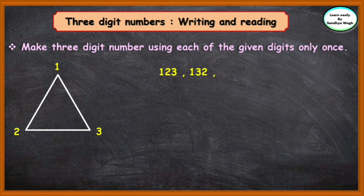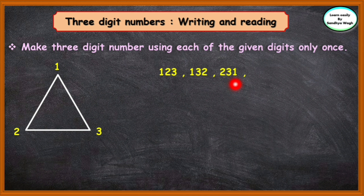Now, let us take 2 in hundreds place. The number will be 2, 3, and 1 — that means 231. Now, let us interchange the tens place and the ones place, so the number will be 2, 1, 3 — that means 213.